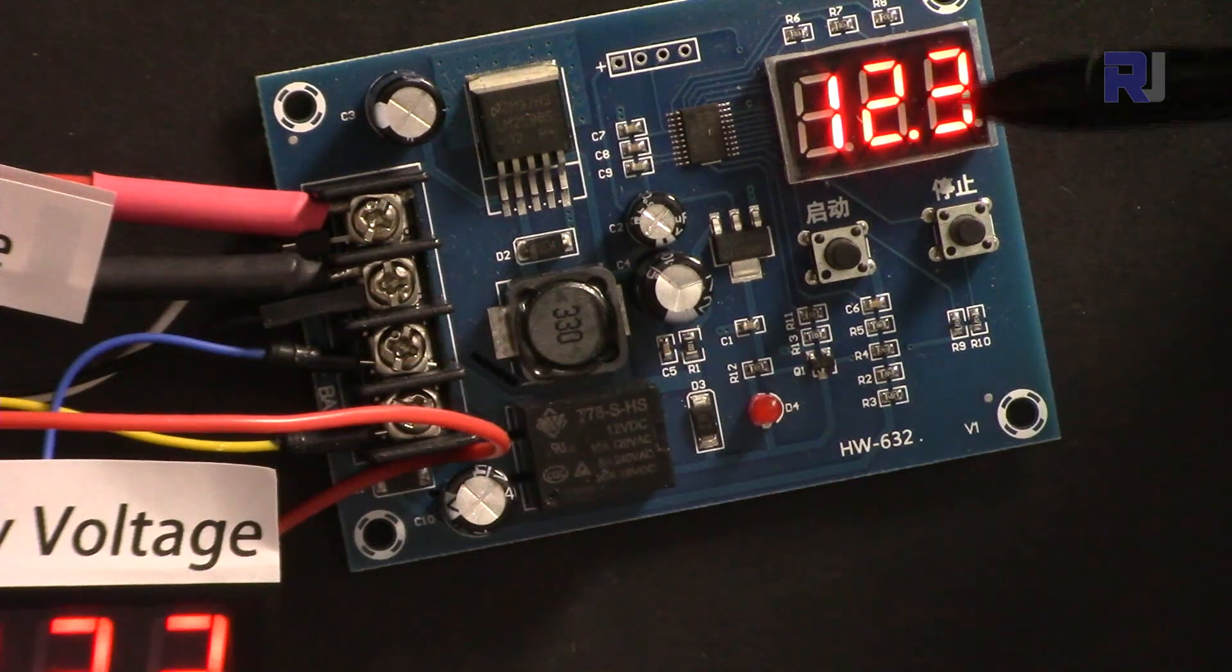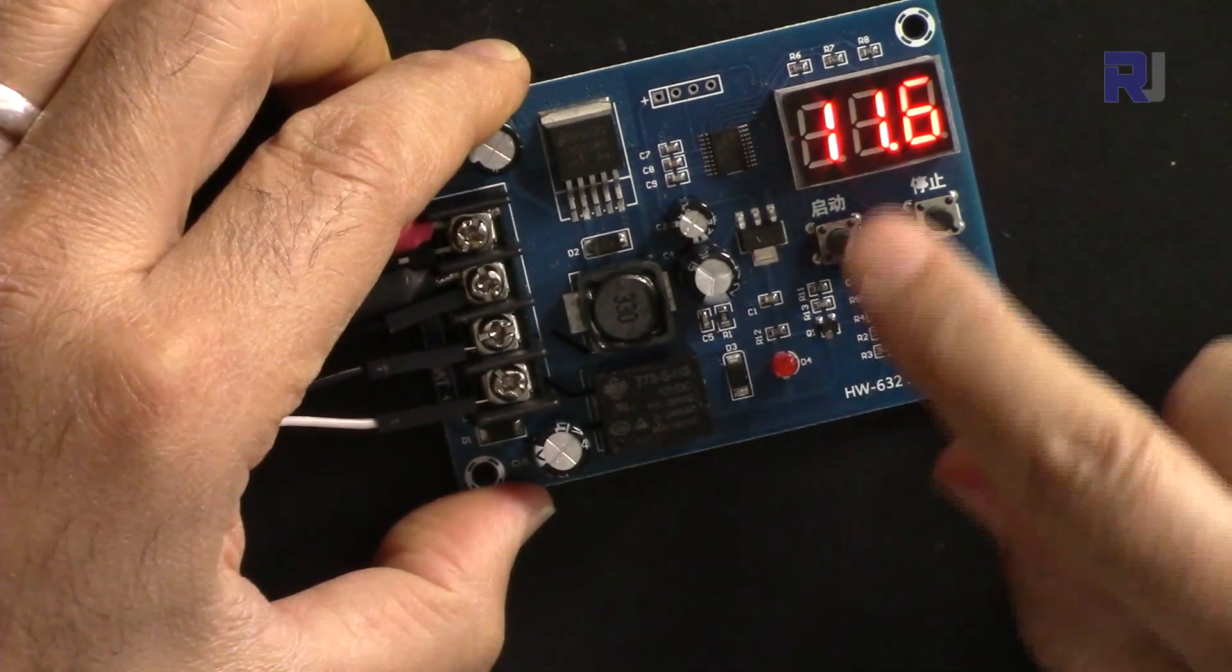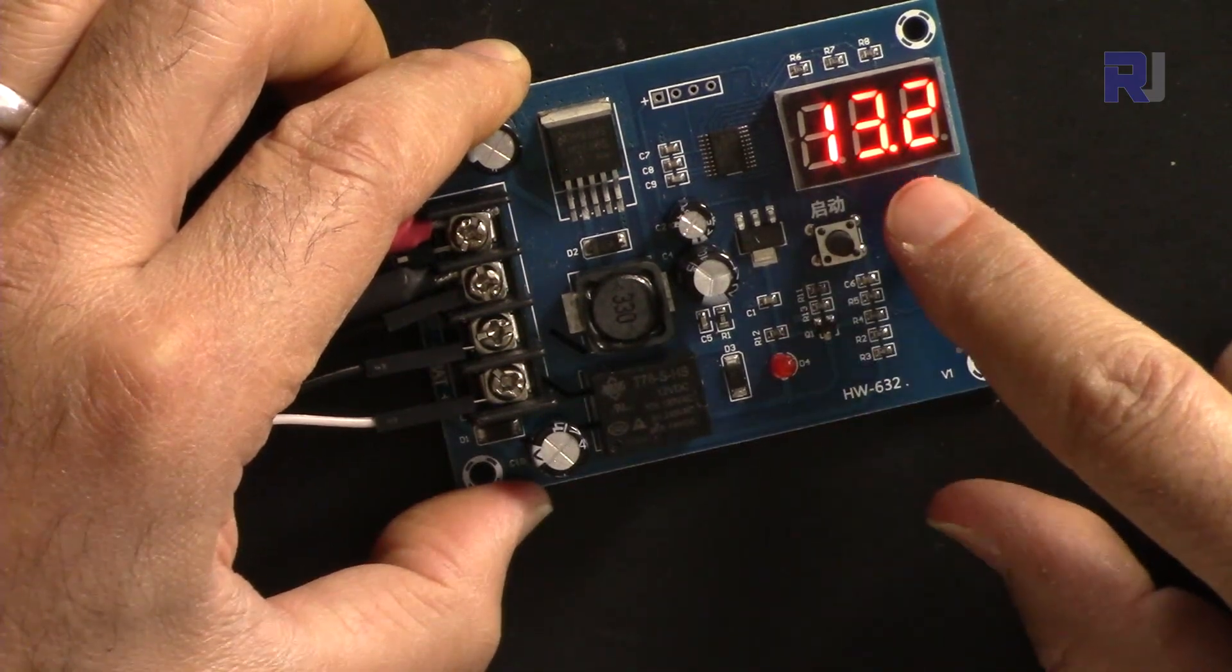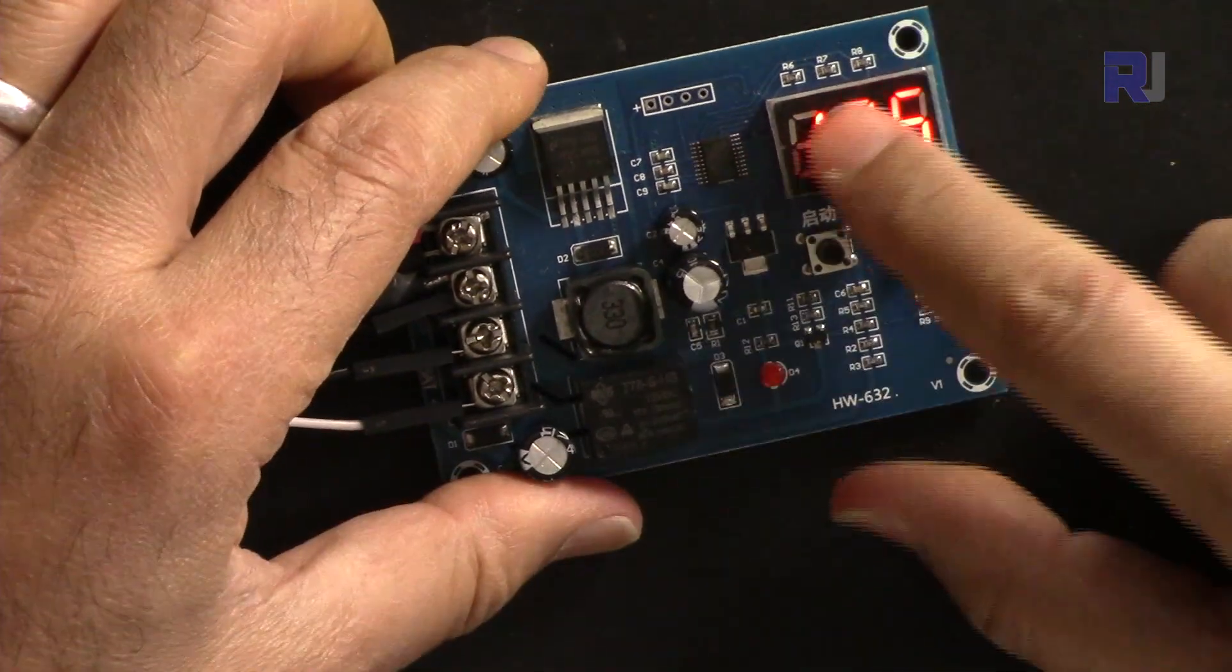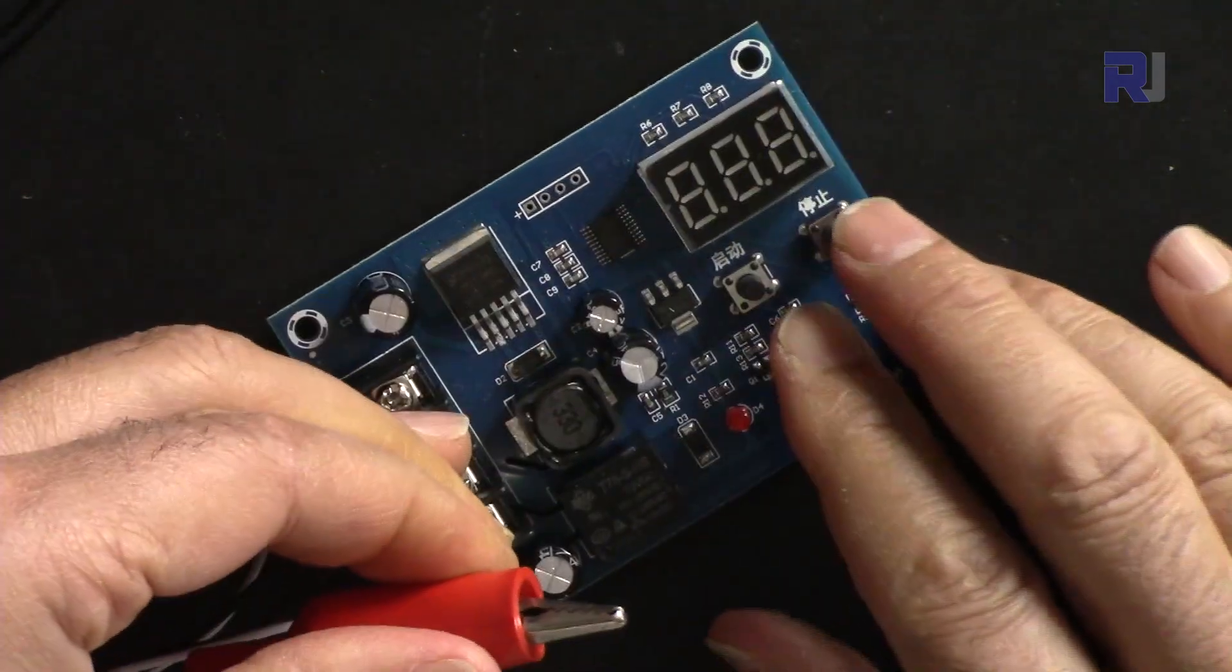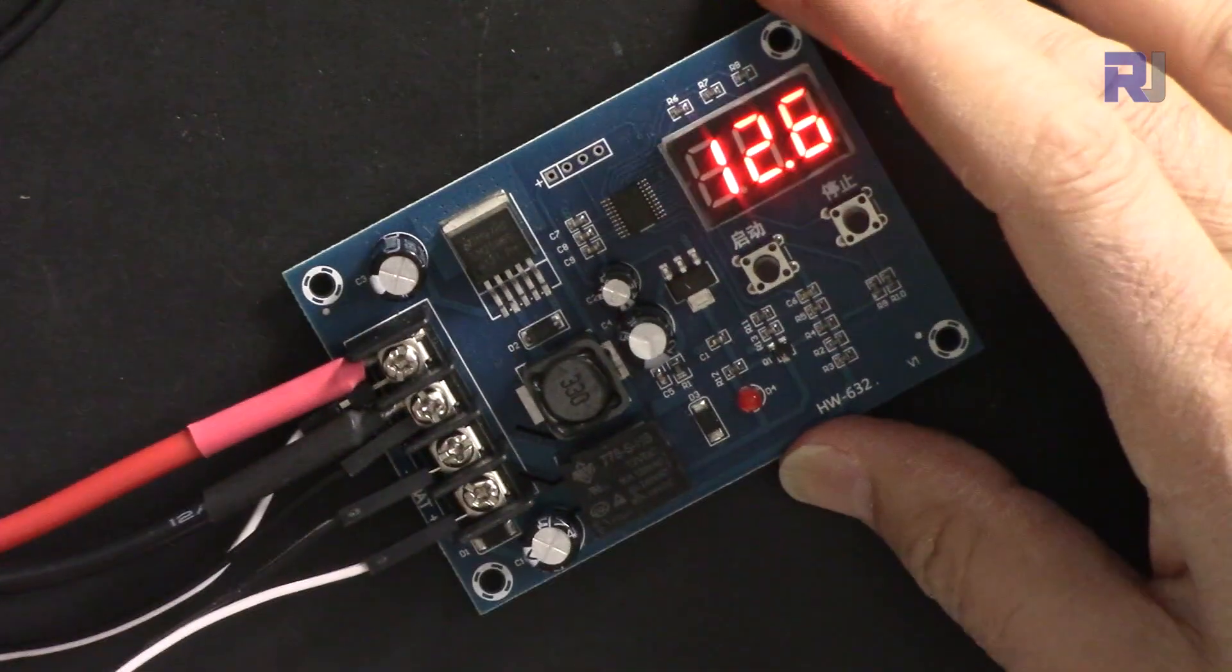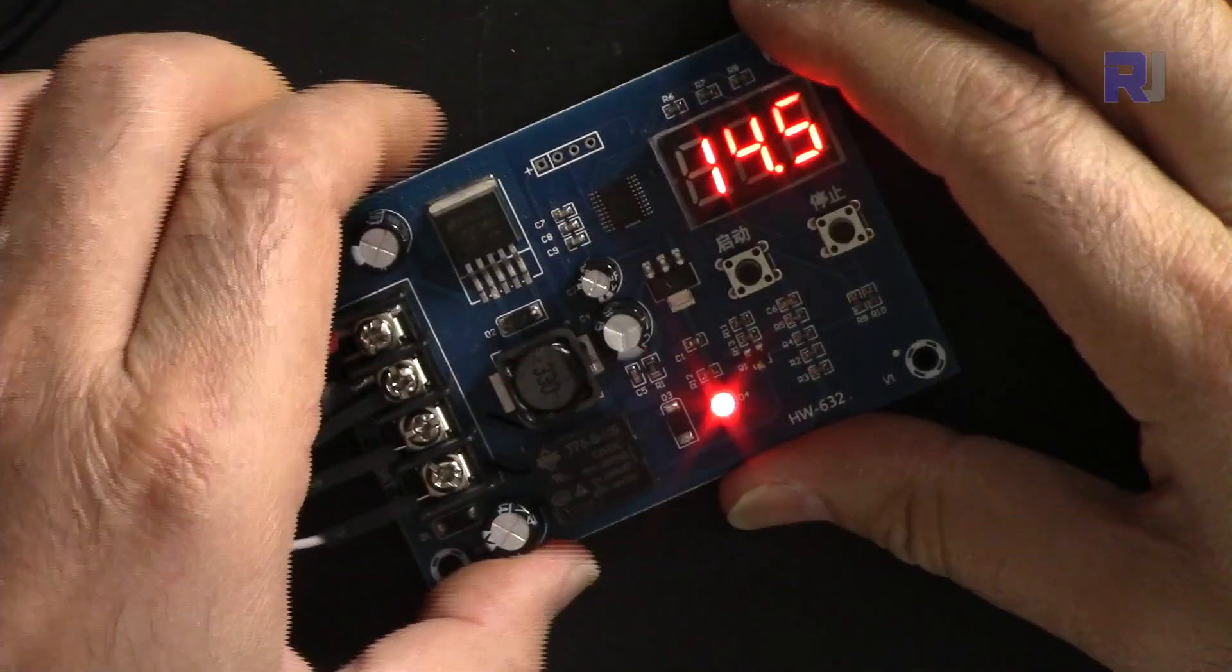By default it always shows the input voltage. When you press this it shows the start voltage. If you wait a few seconds it returns to the actual battery voltage. Press this button to show the stop voltage. To factory reset, disconnect power, hold both buttons pressed, then connect power. It shows 888 and is now reset. The start is now 12.5 and stop is 14.5.